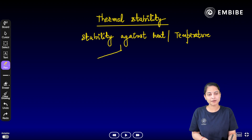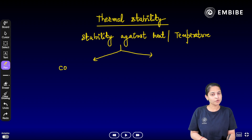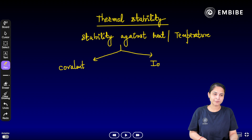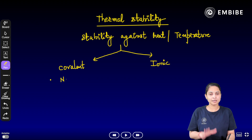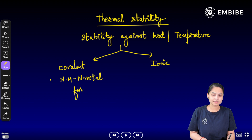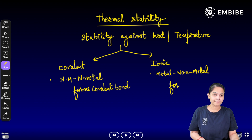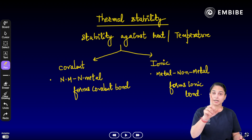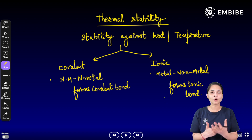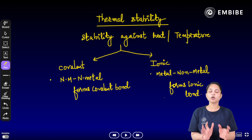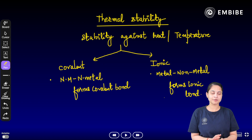First, we need to know the type of bonds in a given compound. Metal and non-metal form ionic bonds, while non-metal and non-metal form covalent bonds. Knowing whether a bond is covalent or ionic is the starting point.